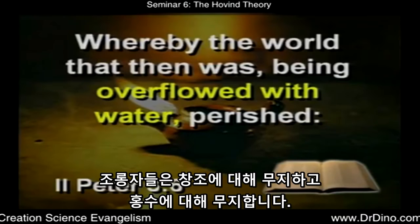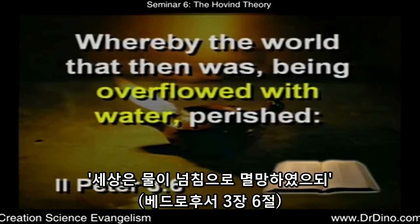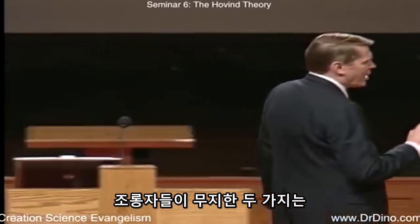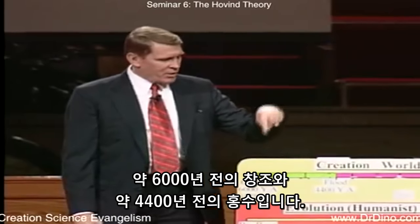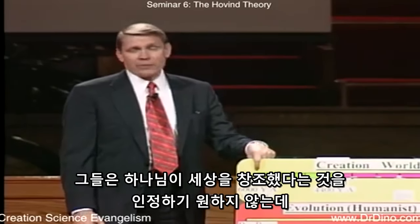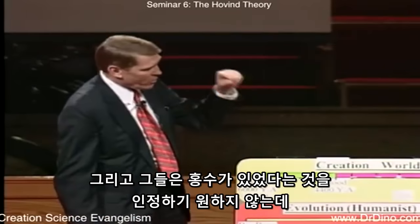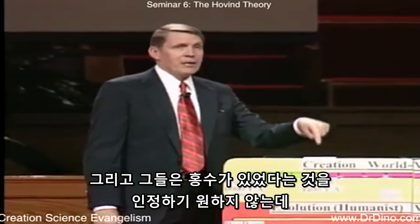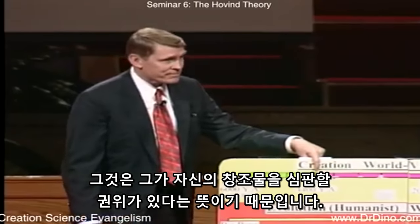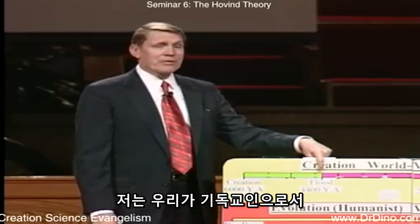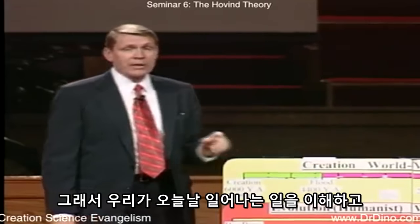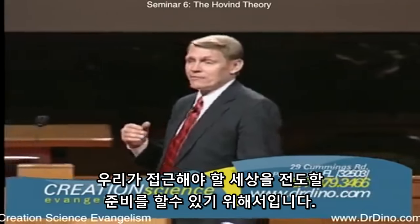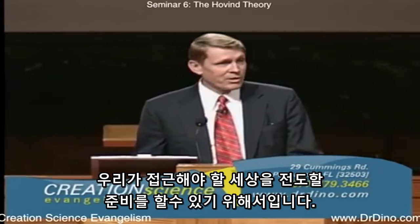The scoffers are ignorant of the creation and ignorant of the flood — 'the world was overflowed with water and perished.' The two things they're ignorant of are the creation about 6,000 years ago and the flood about 4,400 years ago. They don't want to admit God created the world because that would mean He owns it and makes the rules. They don't want to admit there was a flood because that means He has the authority to judge His creation.